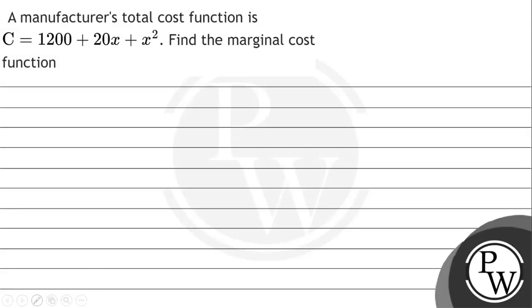Hello, let's read this question. The question says a manufacturer's total cost function is C = 1200 + 20x + x². Find the marginal cost function.